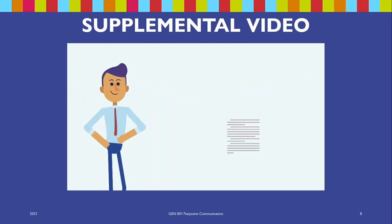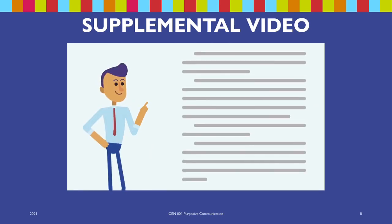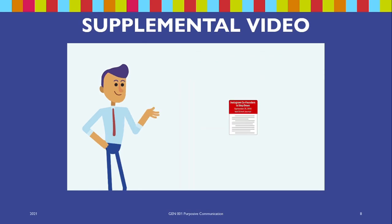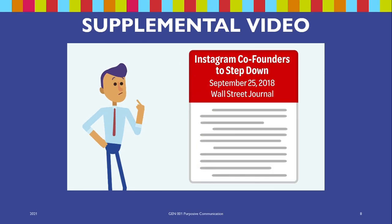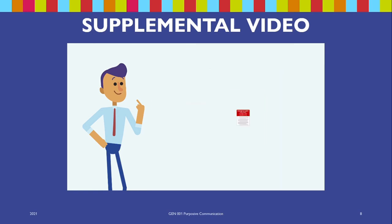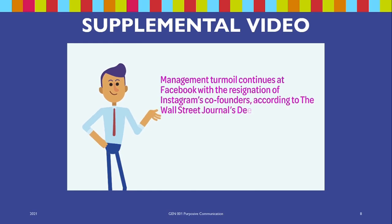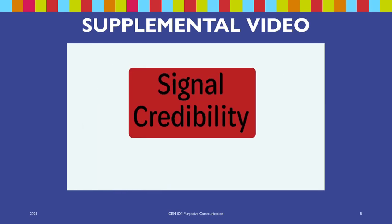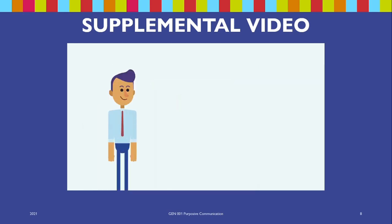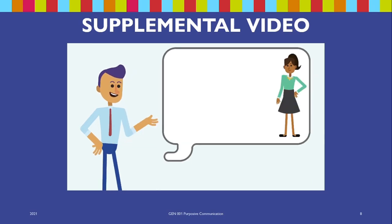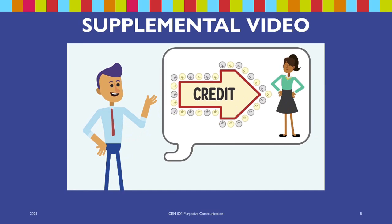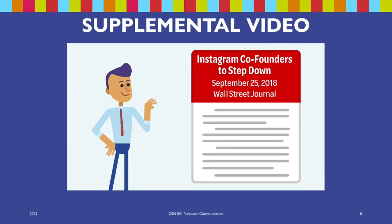A summary is a shortened version of someone else's words and ideas, covering key points only. Here is a summary of the same passage: 'Management turmoil continues at Facebook with the resignation of Instagram's co-founders, according to the Wall Street Journal's Deepa Sitaraman.' Here's an important point: you need to tell your reader who originated the idea and signal why the person is credible.